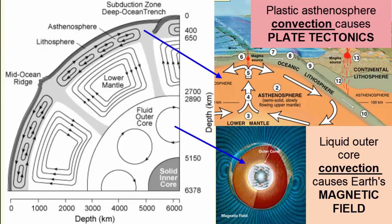This transfer of heat in a plastic or liquid medium is called convection and is the main cause of plate tectonics, convection of the asthenosphere, and the Earth's magnetic field, convection of the outer core.